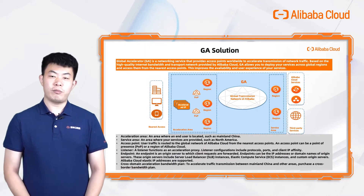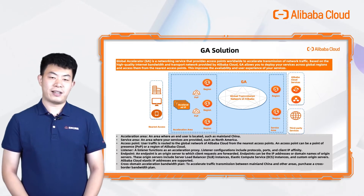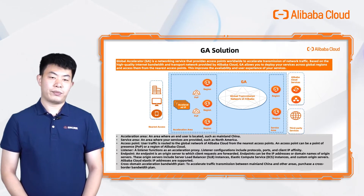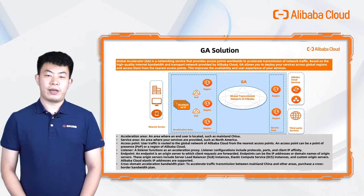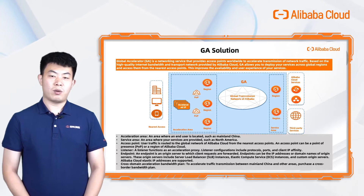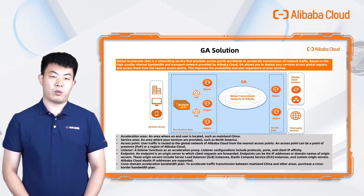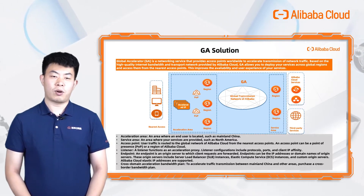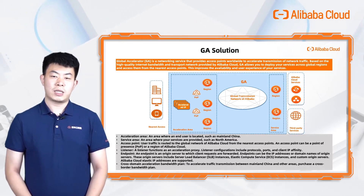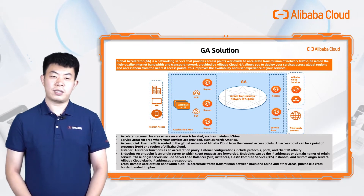Based on the improvement of network quality and experience optimization, we launched our product, Global Accelerator. Global Accelerator is an internet acceleration service covering the world, relying on Alibaba's high-quality global internet backbone and high-quality transmission network. It realizes global access and cross-regional deployment of network services and improves service performance.